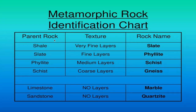Here we have a chart showing the parent rock, its texture, and then what metamorphic rock it becomes. Shale is a sedimentary rock and it becomes slate. Because it has very fine layers of parallel mineral grains, it will be a foliated metamorphic rock. Slate, which is a metamorphic rock that came from shale, can under heat and pressure become a different kind of metamorphic rock called phyllite.